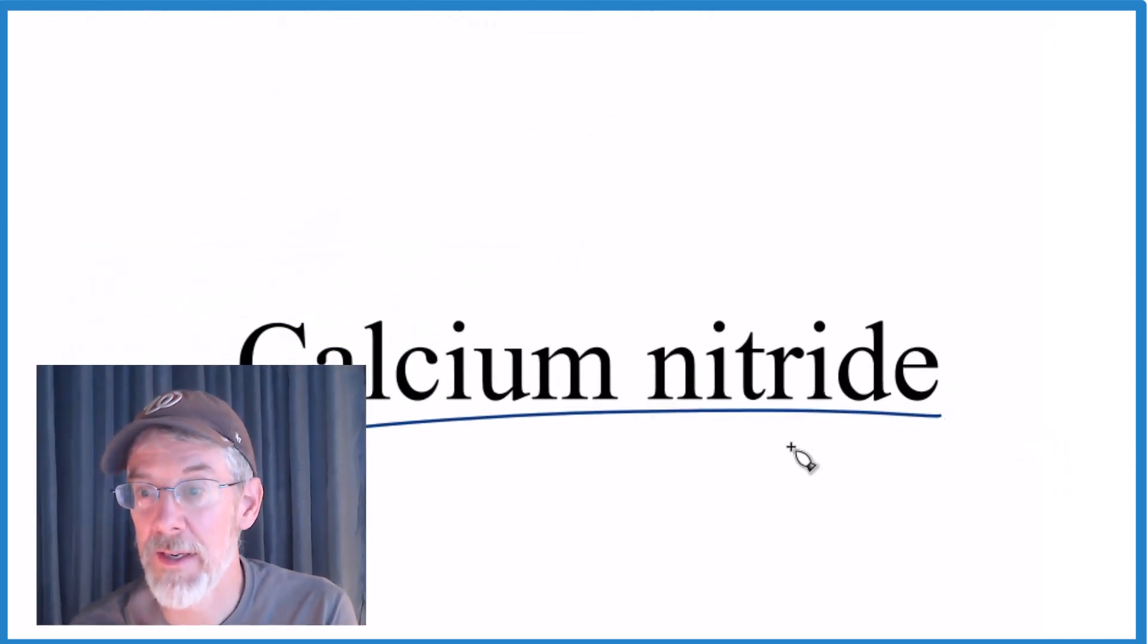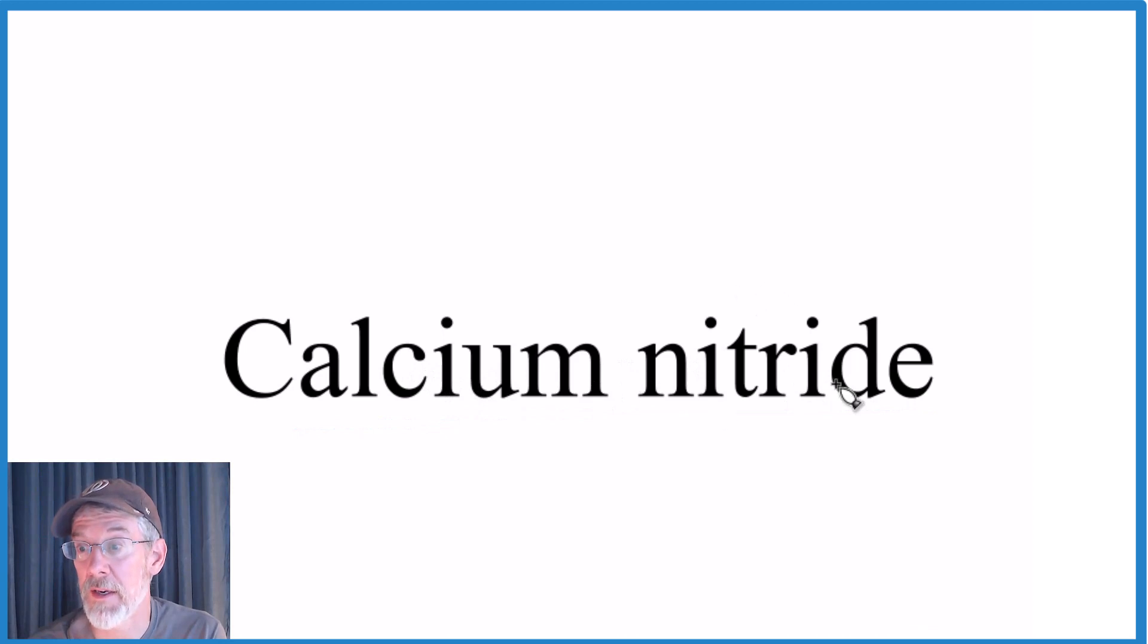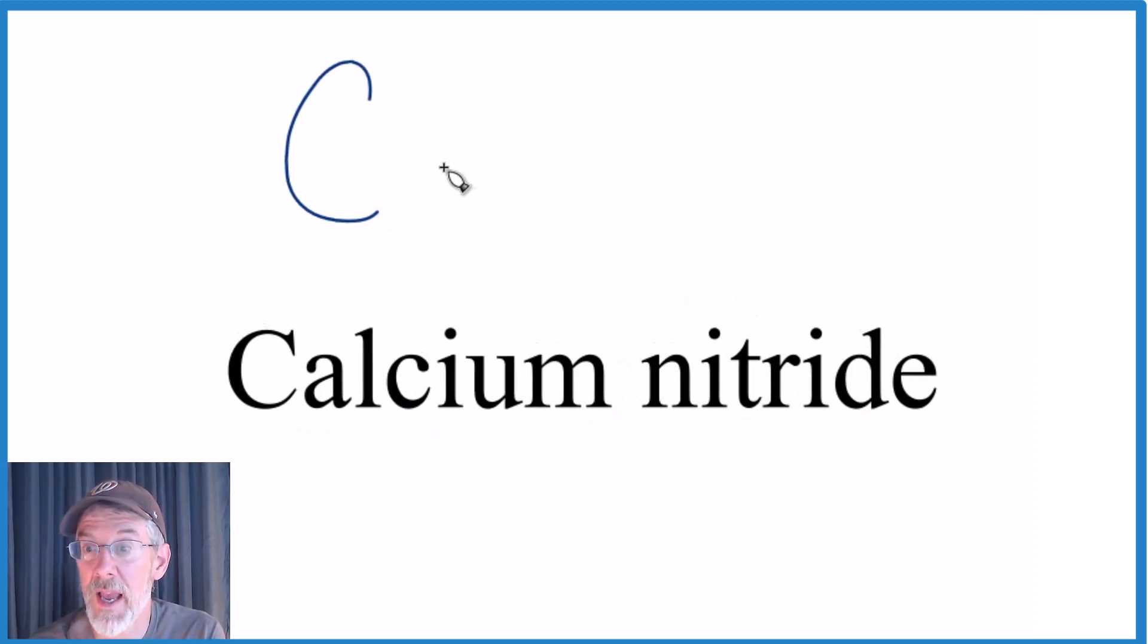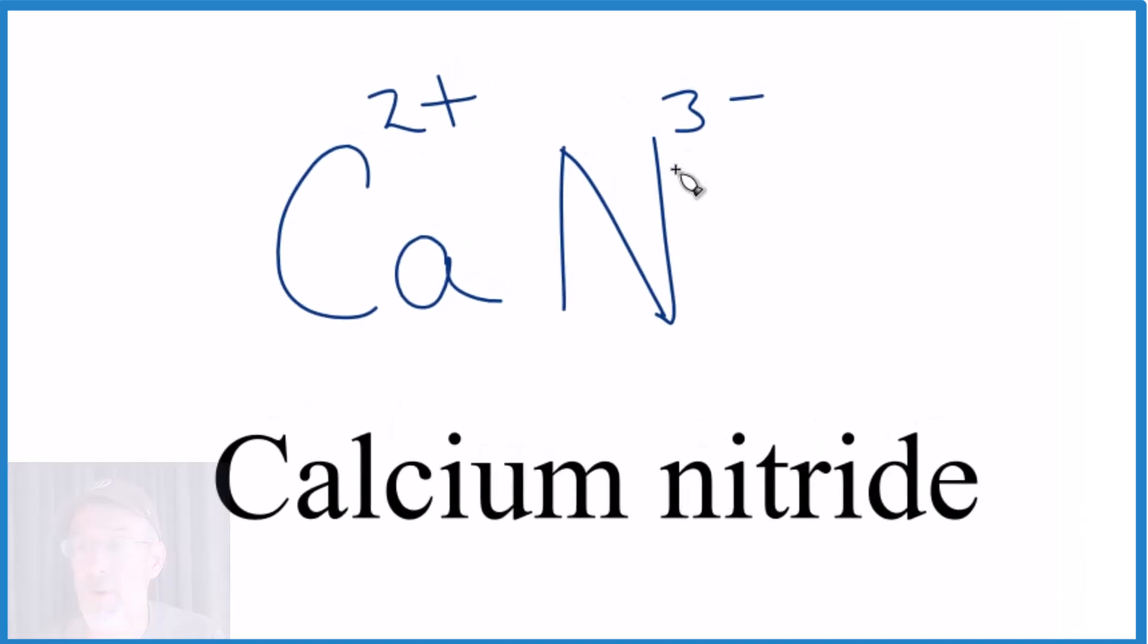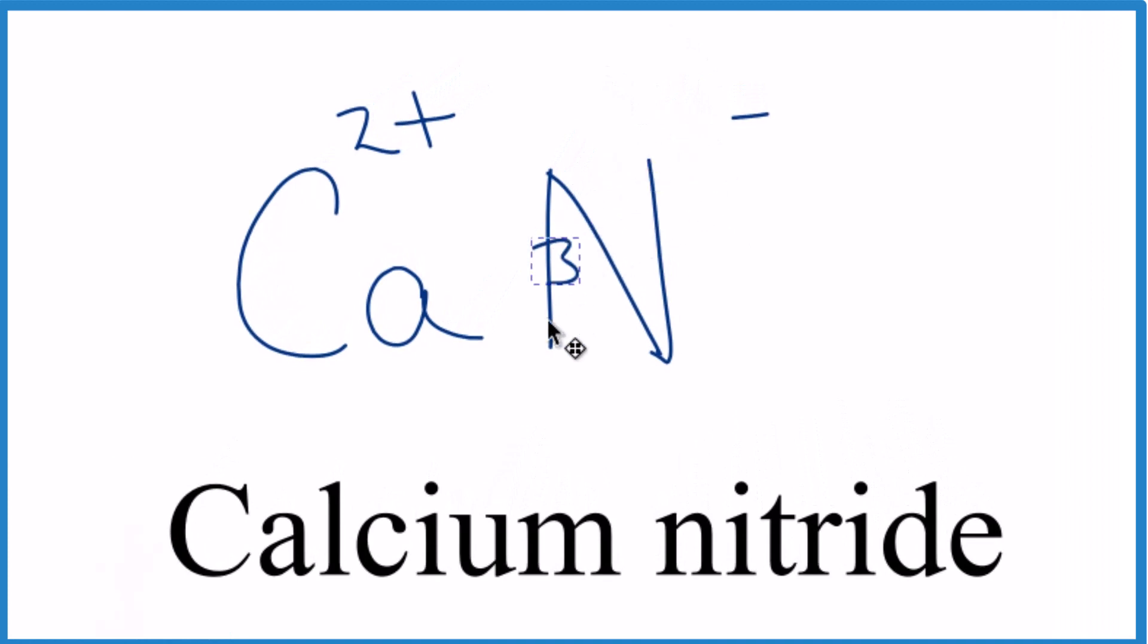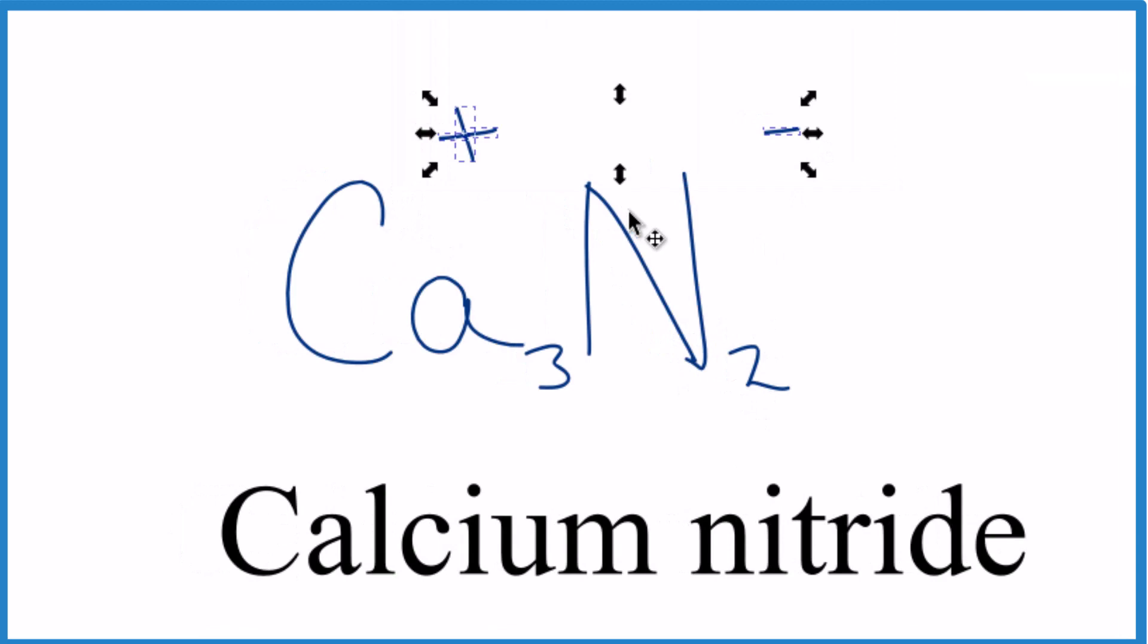Calcium nitride. It's ionic. We have a metal and a nonmetal. So we write Ca and then we write N. That's for the nitrogen there. Nitride is from nitrogen. Now we look the charges up. 2 plus 3 minus. I'll show you how to do that in just a second. And now we crisscross them. So we move the 3 here and the 2 here. Get rid of the charges here. And that's it. This is the formula for calcium nitride. Ca3N2.